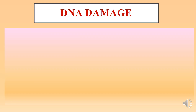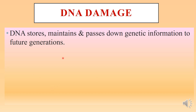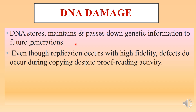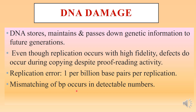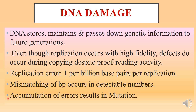DNA stores, maintains, and passes down genetic information to future generations. Even though replication occurs with high fidelity, defects do occur during copying despite the proofreading activity of DNA polymerase. Replication errors are one per billion base pairs per replication, so replication errors are very few. Mismatching of base pairs occurs in detectable numbers, and accumulation of these errors results in mutations.